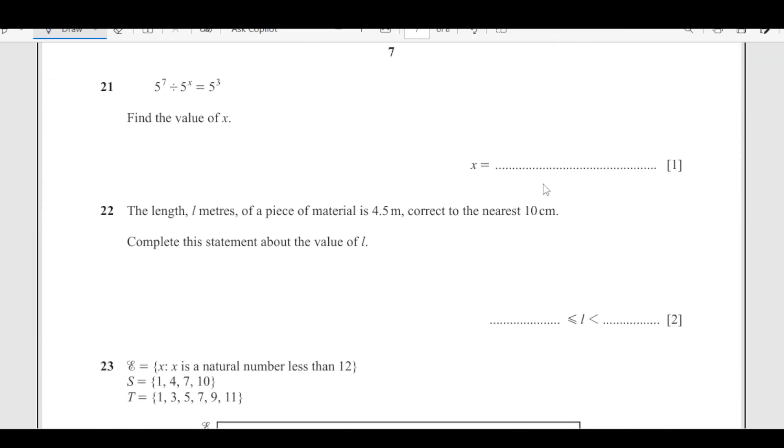Number 21: Find the value of x. 5 raised to power 7 divided by x equals 5³. We'll use the exponent law here. Whenever there's a division sign, the powers are subtracted. So 5 to the power (7 - x) equals 5³. Base is the same, so we can equate the powers: 7 - x = 3, therefore x = 4.